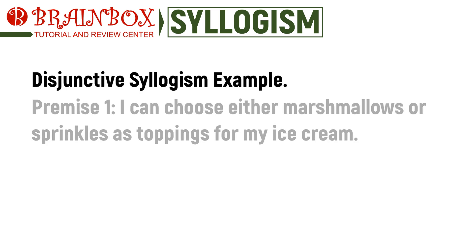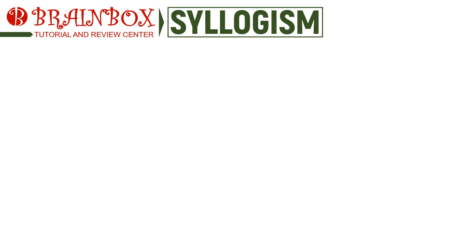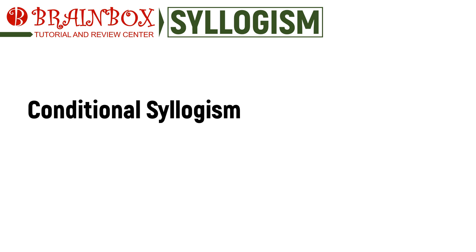Let's take a look at an example to better understand how the disjunctive syllogism works. Say that you wanted to eat some ice cream and you were deciding on the topping. For the first premise, we have: 'I can choose either marshmallows or sprinkles.' The second premise is: 'I do not like sprinkles.' The conclusion states: 'I chose marshmallows as my topping.' By analyzing the syllogism, we can say that the conclusion is logically sound, since marshmallows were the only remaining topping choice.